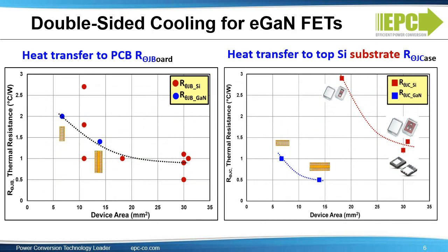Even though our devices are very small, thermal is not a concern due to the excellent thermal properties of our EGAN die. On the left, you can see the thermal resistance to PC board that is similar to silicon MOSFETs. However, on the right-hand side, we're comparing thermal resistance to case against the absolute best thermal package available for MOSFETs, the DirectFET. The EGAN devices are six times better than the best-in-class DirectFETs, because EGAN devices can dissipate heat through the PC board, through their top, and through the lateral sides of the device.